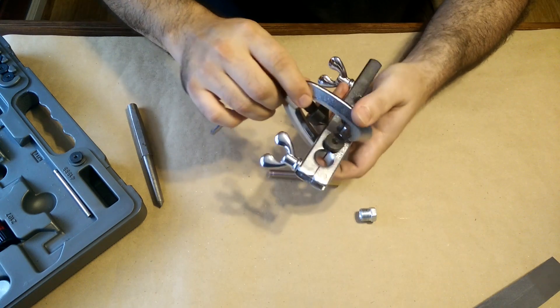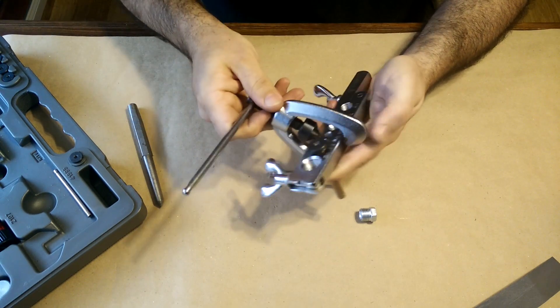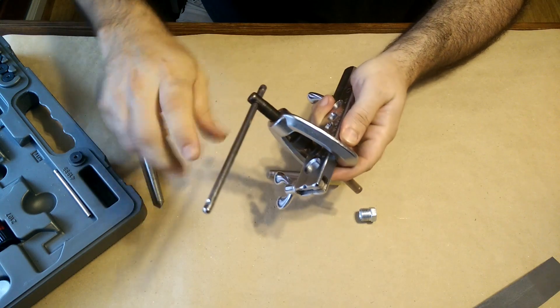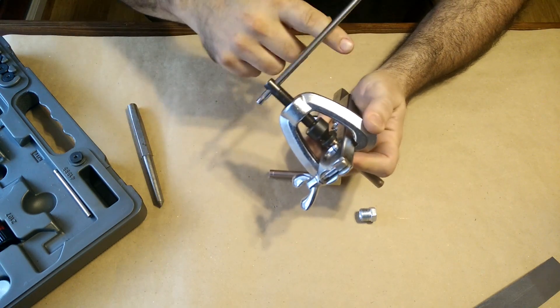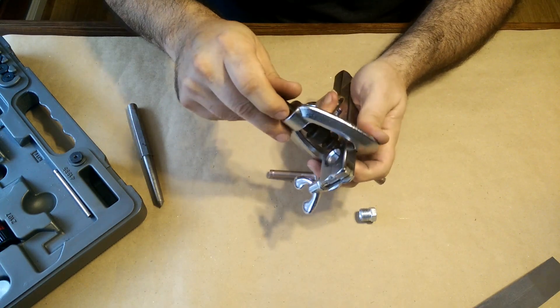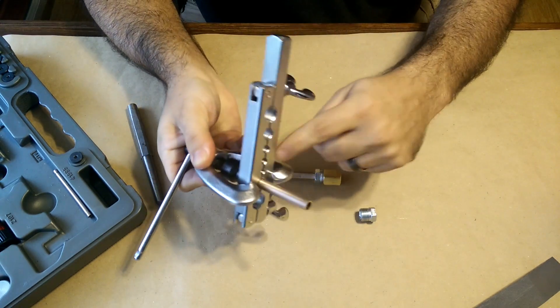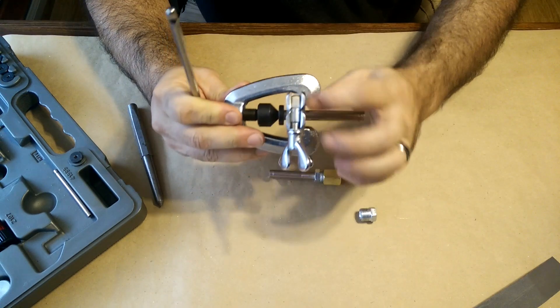So you get your clamp on, and a lot of times you would put this in a vise if you can, but a lot of times you might have to do this under the car because you're already working on an existing line. The other little trick here is to make sure that your jaws are sitting here squarely up against the tubing holder.